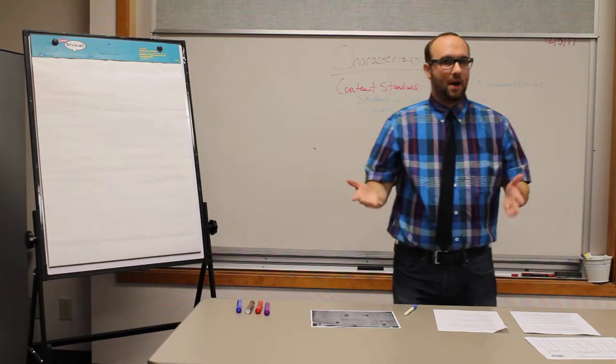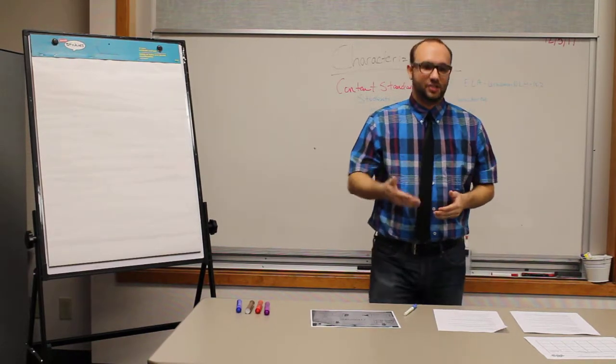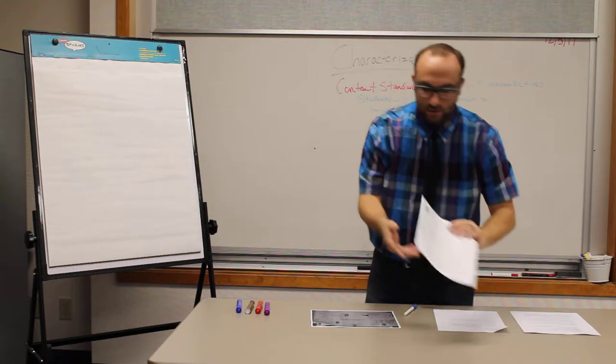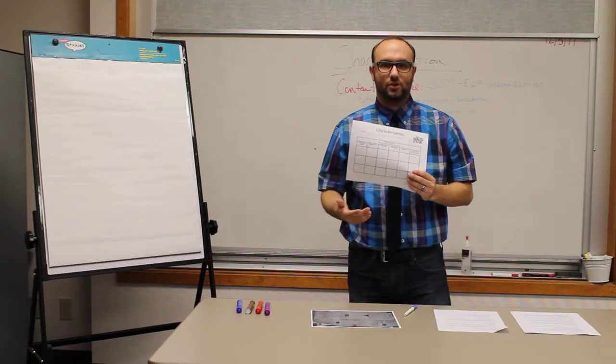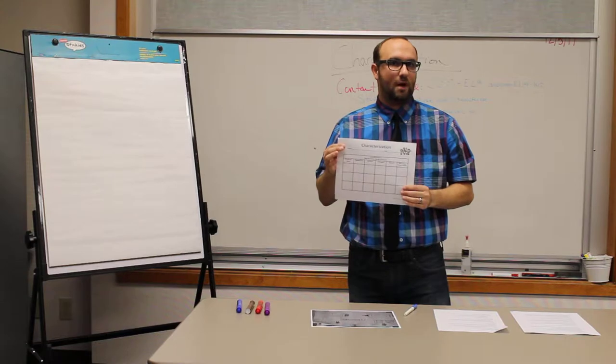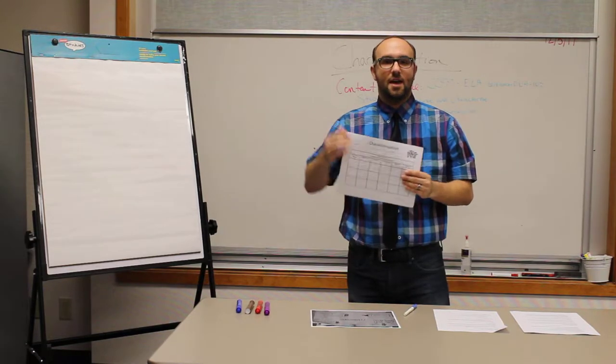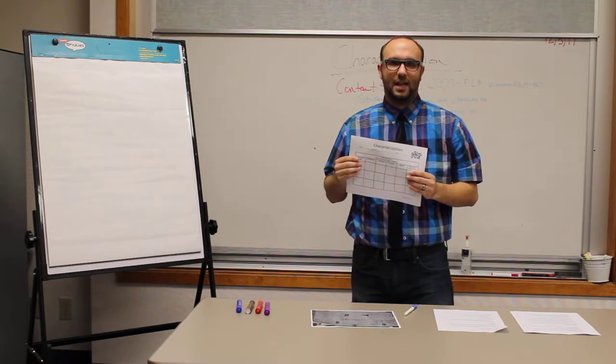Okay, now we're going to go ahead and pair up with your elbow partner. We're going to discuss who you've decided and what things you've found for characterization through this Little Red Riding Hood. I'll give you folks about five minutes so we can do so and then we'll go ahead and come back and share together as a class.